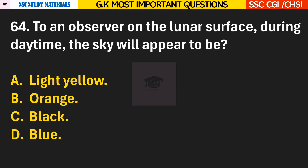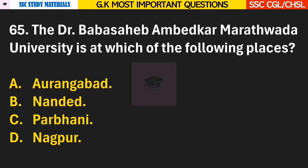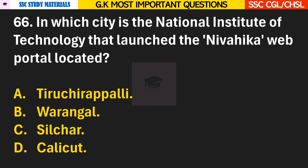Question 64: To an observer on the lunar surface during daytime, the sky will appear to be? Answer C — Black. Question 65: The Dr. Babasaheb Ambedkar Marathwada University is at which of the following places? Answer A — the university is in Aurangabad. Question 66: In which city is the National Institute of Technology that launched the Niwahika web portal located? Answer D — it is located in Kozhikode, which is in Kerala.